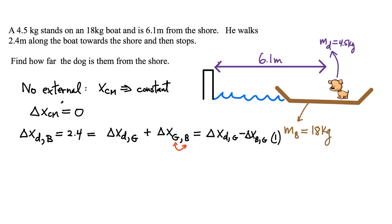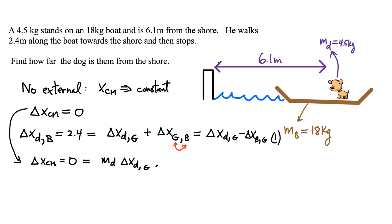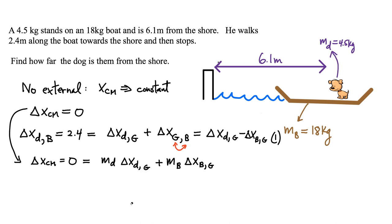Now let's use the fact that the position of the center of mass doesn't change. We can write the change in the center of mass of the system — everything with respect to the ground — as the mass of the dog multiplied by the displacement of the dog relative to the ground, plus the mass of the boat multiplied by the displacement of the boat relative to the ground, and this equals zero. This is Equation 2.